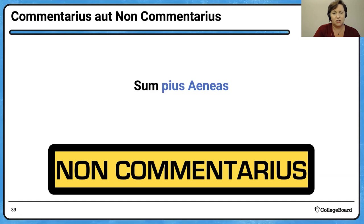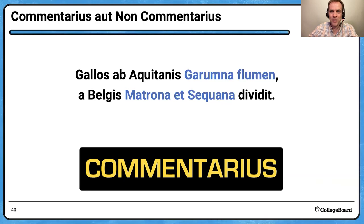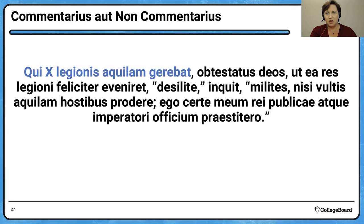Next: lots of geography — the Garonne River ('Garumna') divides the Gauls from the Aquitani; the Marne and the Seine ('Matrona' and 'Sequana') divide them from the Belgians. Geographic descriptions are definitely a characteristic of the commentarius — commentarius. Next: the man carrying the eagle of the Tenth Legion — 'decimae legionis aquilam gerebat.' Having sworn to the gods, he encourages the soldiers 'desilite, milites' — jump down, soldiers. This highlights a heroic common man — commentarius. You couldn't even scan this, so it's definitely not a poem.